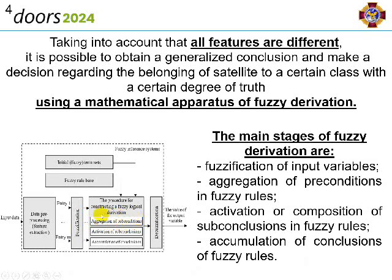The main stages of fuzzy derivation are: fuzzification of input variables, aggregation of preconditions in fuzzy rules, activation or composition of subconclusions in fuzzy rules, and accumulation of conclusions of fuzzy rules. Fuzzification of input variables establishes a correspondence between the specific numerical value of a separate input variable of the fuzzy derivation system and the value of the membership function of the corresponding term of the input linguistic variable. Specific values of membership functions for each of the linguistic terms used in the prerequisites of the fuzzy inference system rule base must be determined for all input variables.